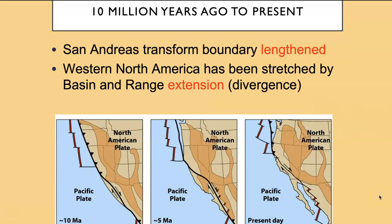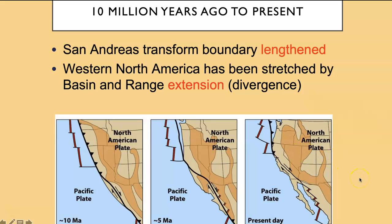Let's move forward in time to the last 10 million years. The transform boundary lengthened over time as those triple junctions moved farther and farther apart. The northern triple junction moved north to where it presently is — at the south end of the Juan de Fuca Plate. The southern triple junction moved to the south. Eventually, part of the transform that was off the coast was abandoned and a new spreading center began in the Gulf of California. We have simultaneous stretching of the crust in these regions, and now you can see that Nevada looks pretty much the size it is today. This is called basin and range extension.